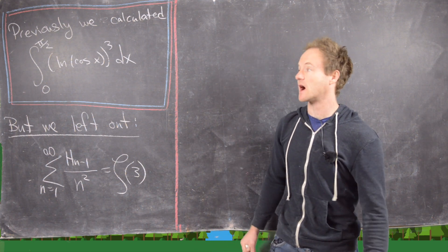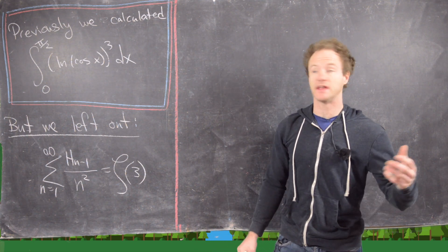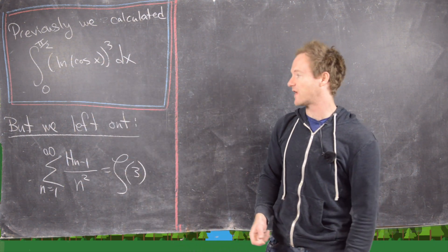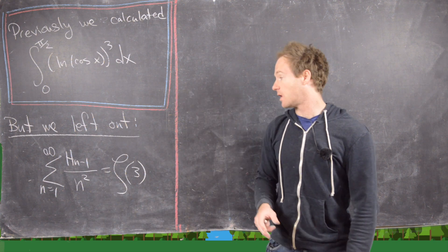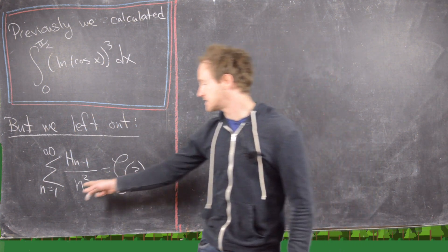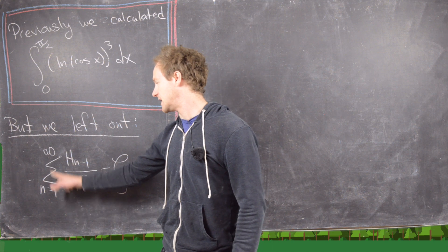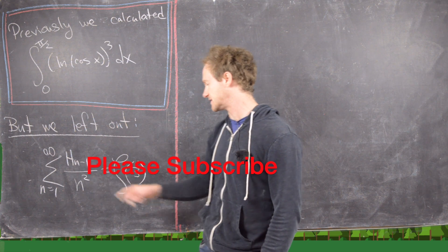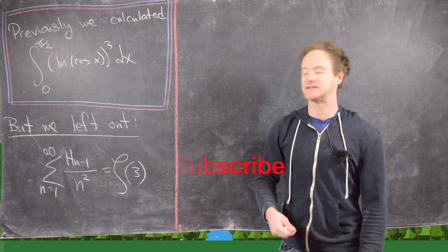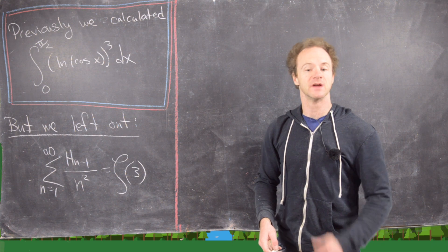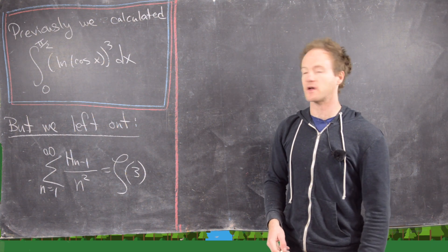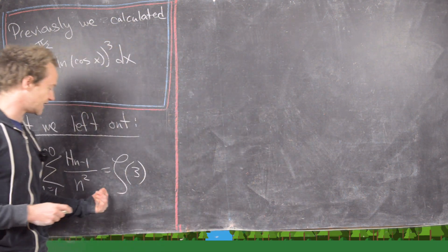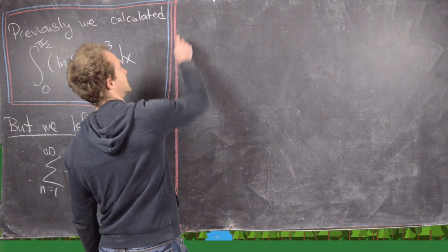Previously, as part of our grand saga to calculate the definite integral from 0 to π/2 of powers of the natural log of cosine of x, we left out a small detail: if you take the sum from n=1 to infinity of the (n−1)th harmonic number over n², you get the Riemann zeta function evaluated at 3. This video, I want to plug that hole by first calculating some companion results that will build up towards this.